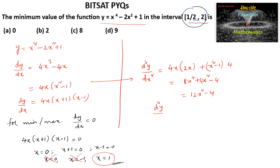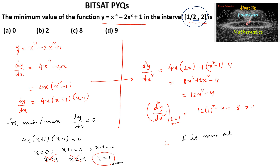Now, d²y/dx² at x = 1 gives 12(1²) - 4 = 12 - 4 = 8, which is positive. Since the second-order derivative is positive at x = 1, the function has a minimum at x = 1.